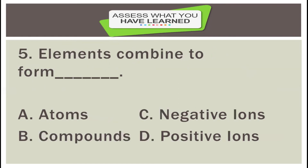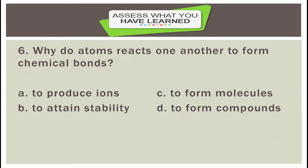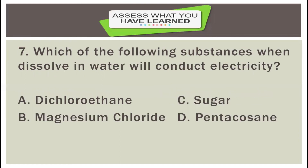Number five: elements combined to form blank is called — A: atoms; B: compounds; C: negative ions; D: positive ions. Number six: why do atoms react with one another to form chemical bonds? A: to produce ions; B: to attain stability; C: to form molecules; D: to form compounds. Number seven: which of the following substances, when dissolved in water, will conduct electricity? A: dichloroethane; B: magnesium chloride; C: sugar; D: pentacosane.